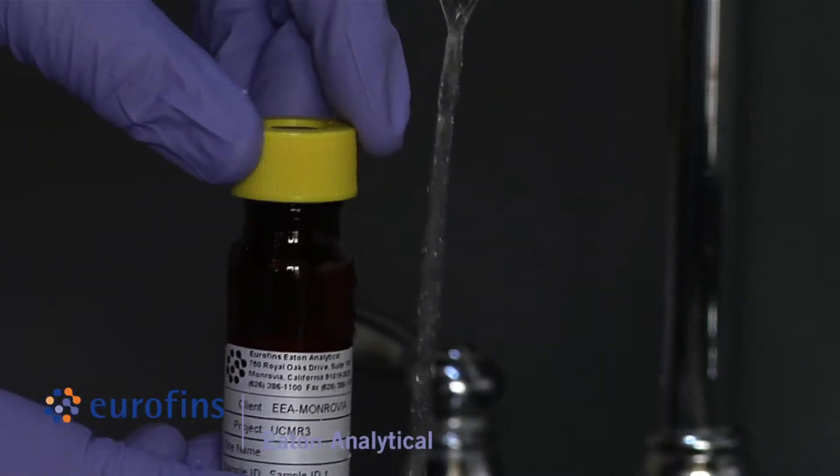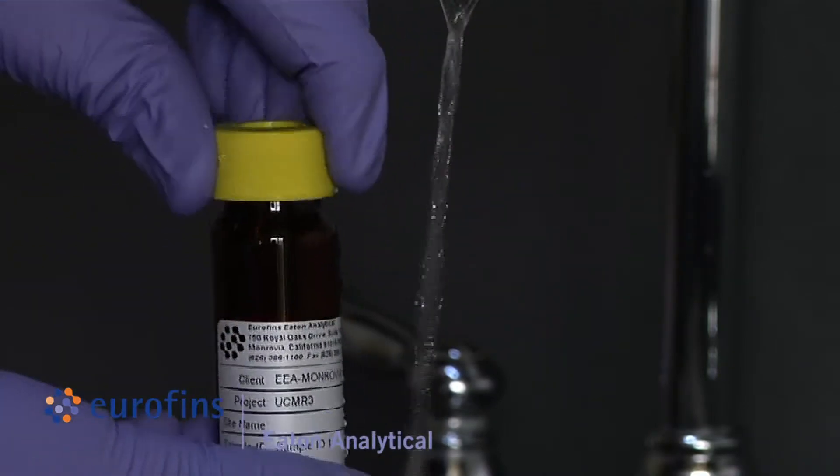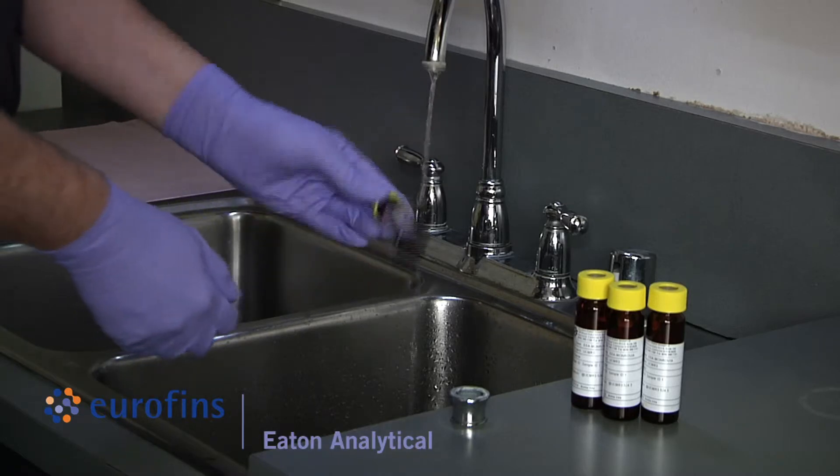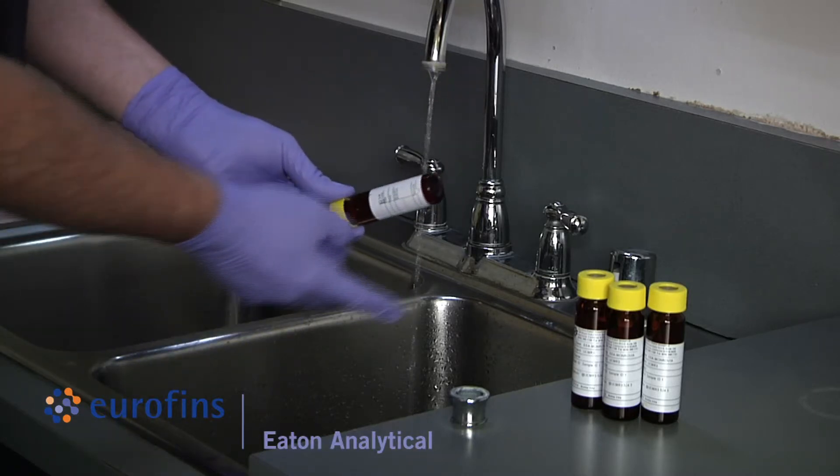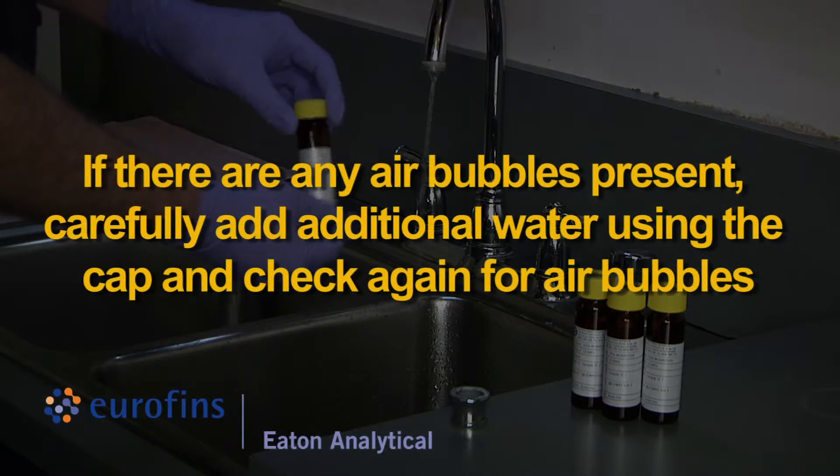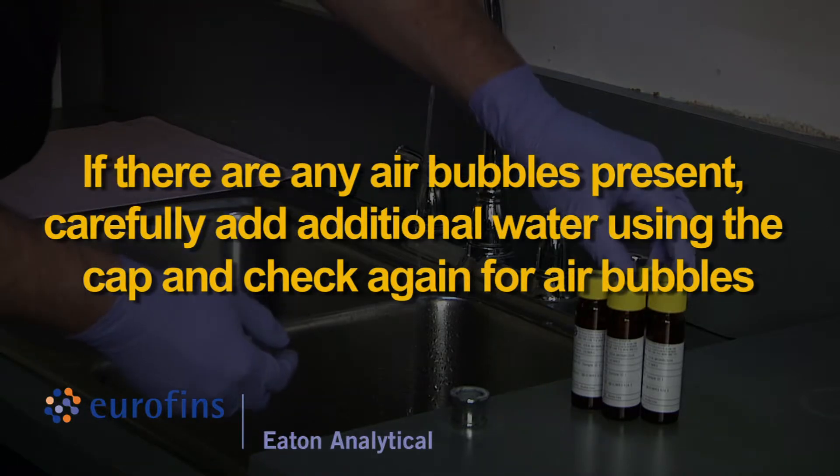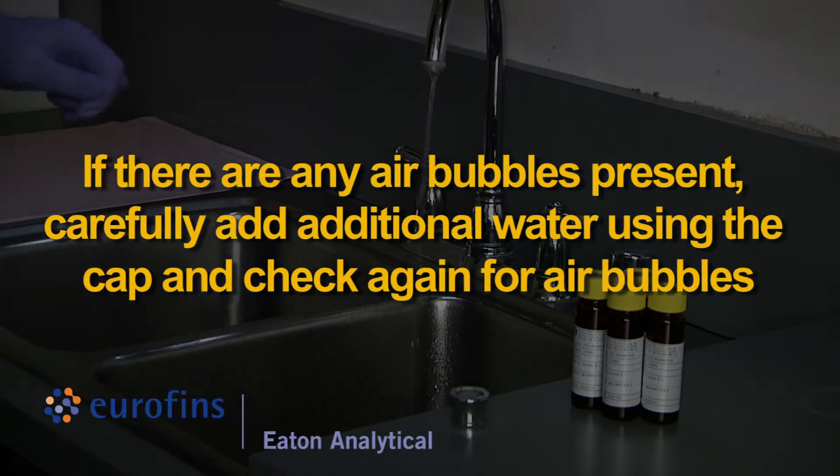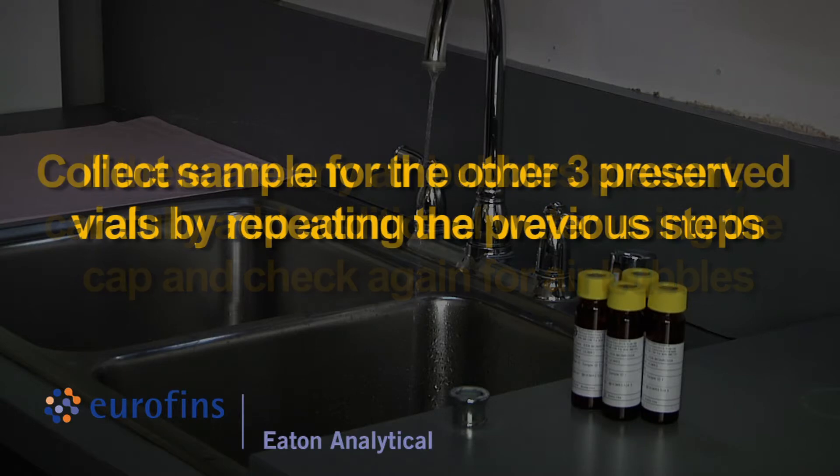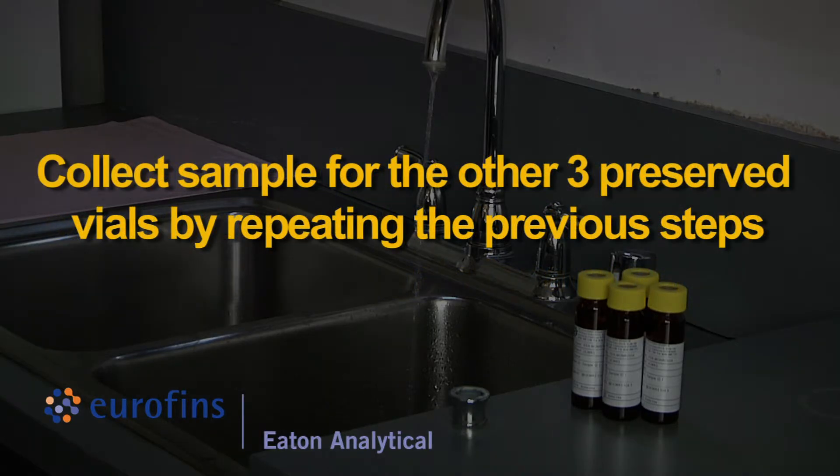Cap the sample vial tightly. Gently invert and tap the vial to check for air bubbles in the sealed vial. If there are any air bubbles present, carefully add additional water using the cap and check again for air bubbles. Collect samples for the other three preserved vials by repeating the previous steps.